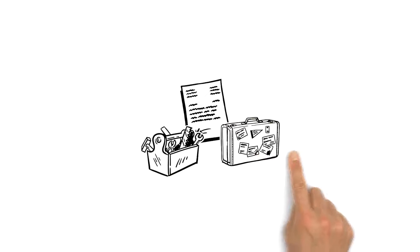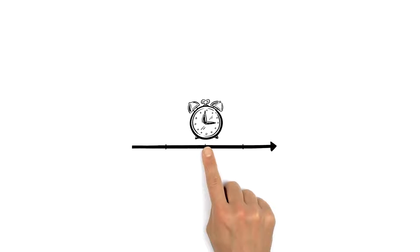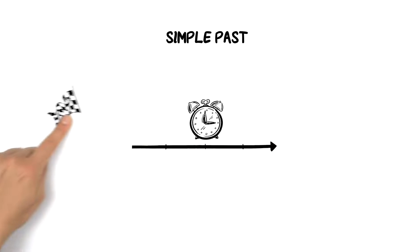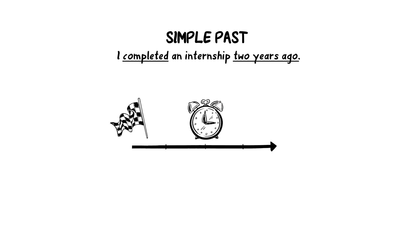The content should provide two or three solid examples of your skills and experience. But watch your English tenses. Use simple past for events finished in the past and saying when exactly. For example, I completed an internship two years ago.